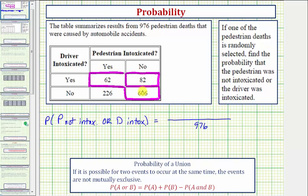So these three cells represent the favorable number of ways of selecting one death where the pedestrian was not intoxicated or the driver was intoxicated. So the numerator would be the quantity 62 plus 82 plus 606, which would be equal to 750. So the probability is 750 divided by 976.